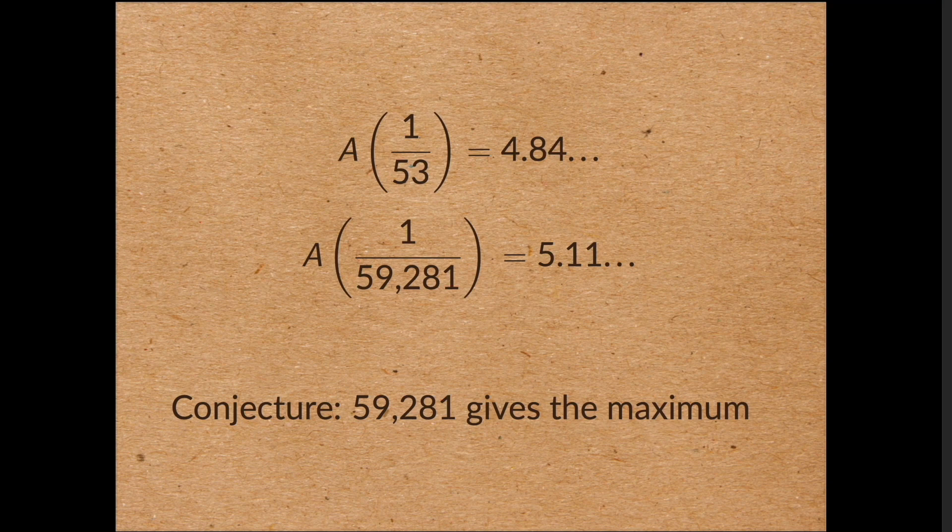Now this is just a guess. And so now I have a challenge for the viewers. If you can find a prime with a bigger average than this, then I'll give you a beer, or equivalent beverage of your choice. Must be 21 or over. Even better, if you prove that 59,281 gives the biggest average, I'll give you a bottle of fine Australian wine.